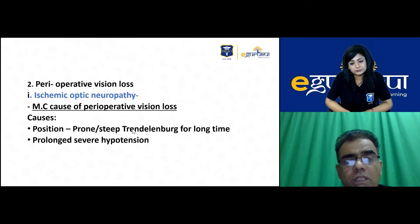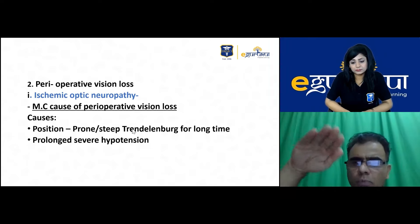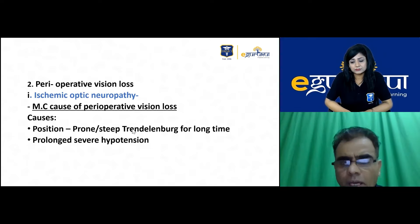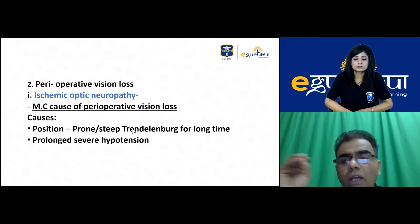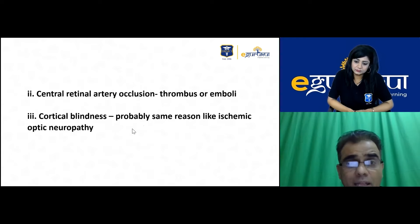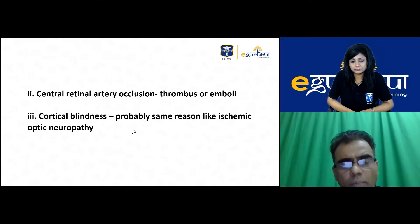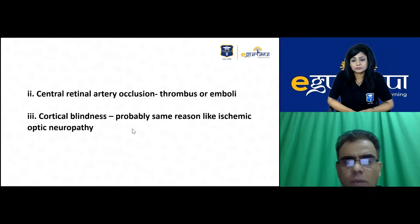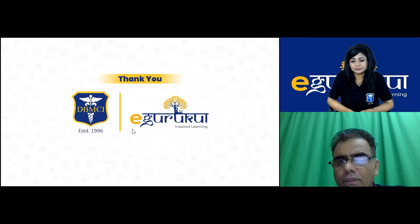Perioperative vision loss can result from ischemic optic neuropathy — the most common cause, typically in prone position where the eye gets compressed, or in steep Trendelenburg position causing ocular edema, especially with associated hypotension. Central retinal artery occlusion can occur due to thrombotic or embolic complications. Cortical blindness has also been reported from these positioning-related causes.